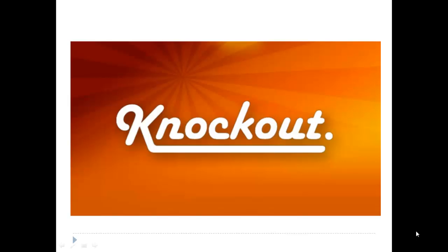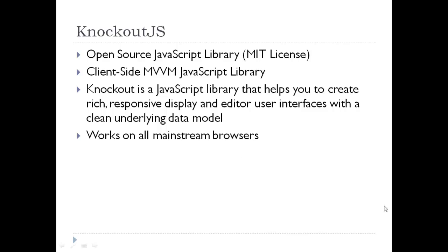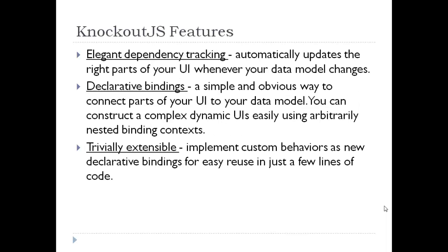Let's start Knockout.js. Knockout.js is a client-side MVVM JavaScript library. It's an open source JavaScript library with an MIT license, and it helps us to create rich, responsive display and editor user interfaces with a clean underlying data model. It works on all mainstream browsers. Some of the cool features of Knockout.js are elegant dependency tracking — that is, automatically updating the right parts of your UI whenever your data model changes.